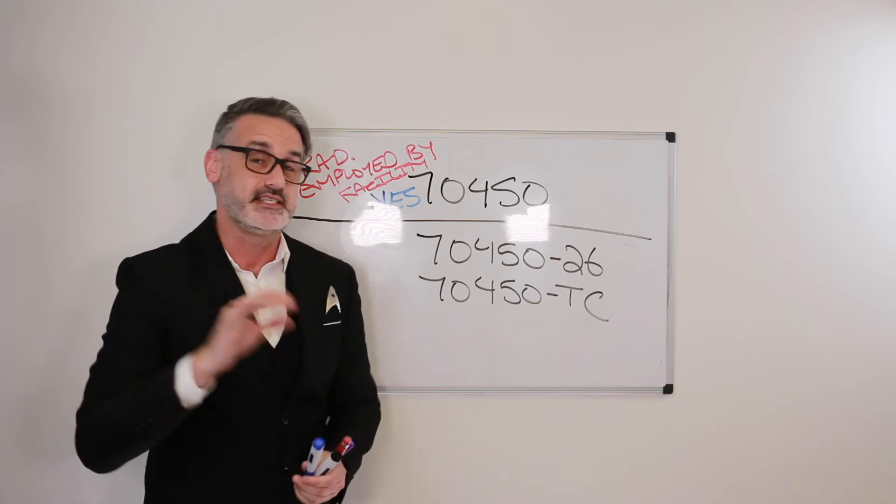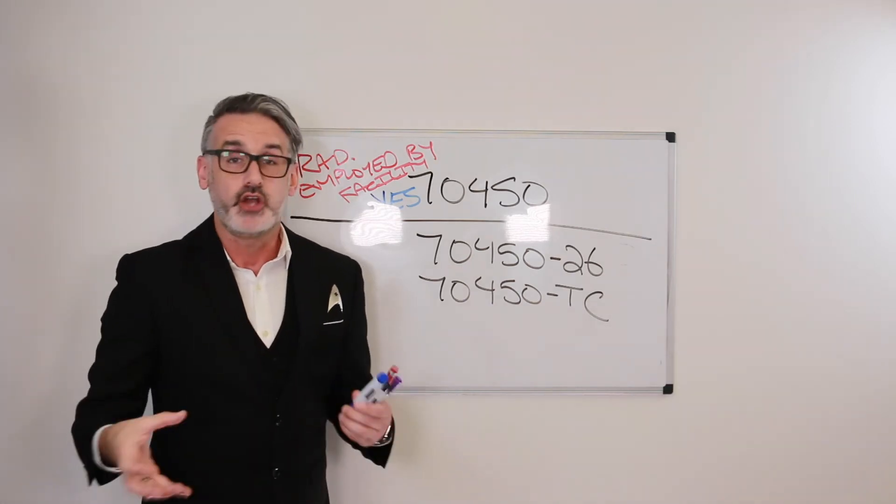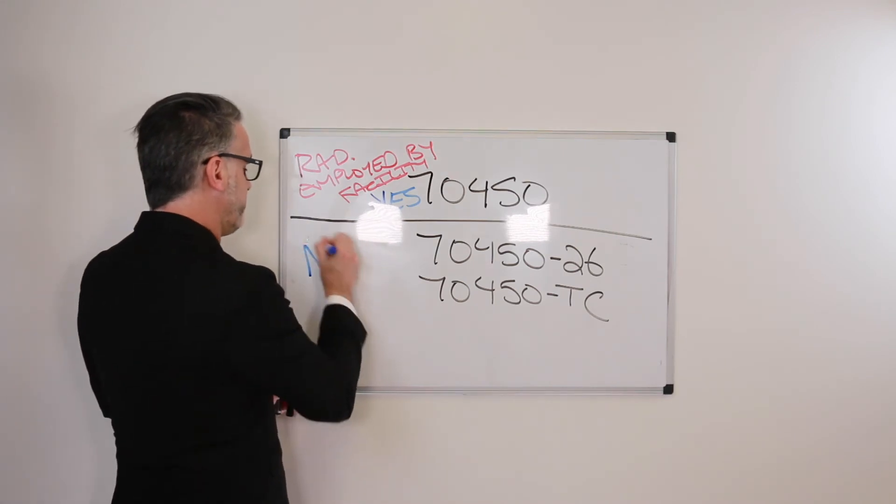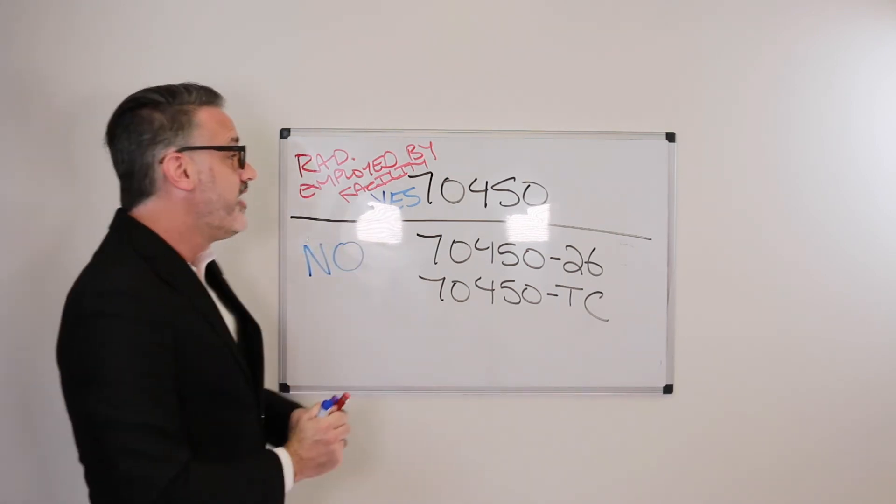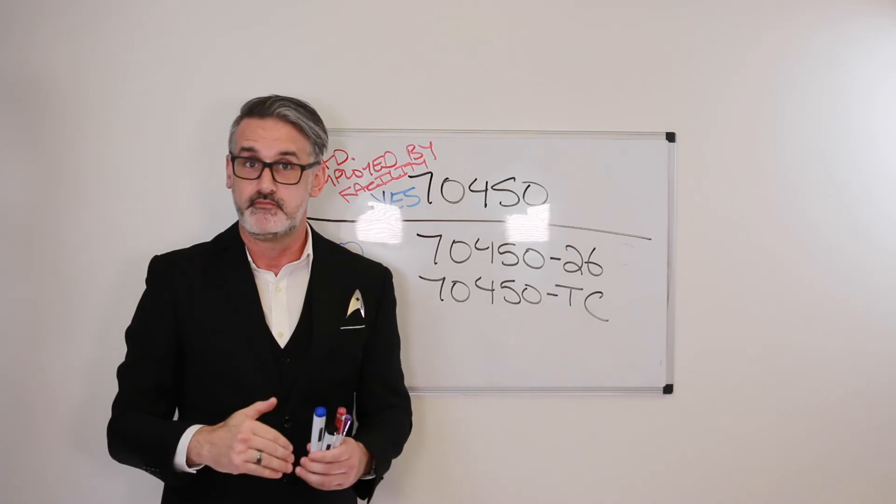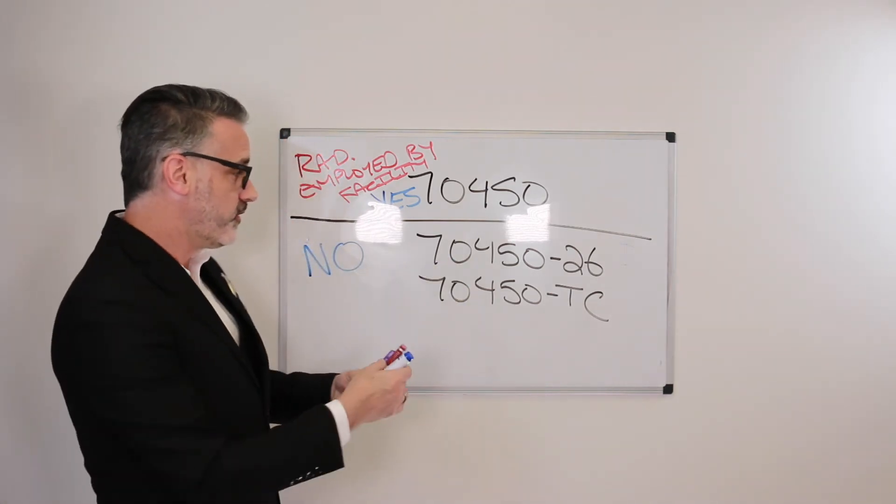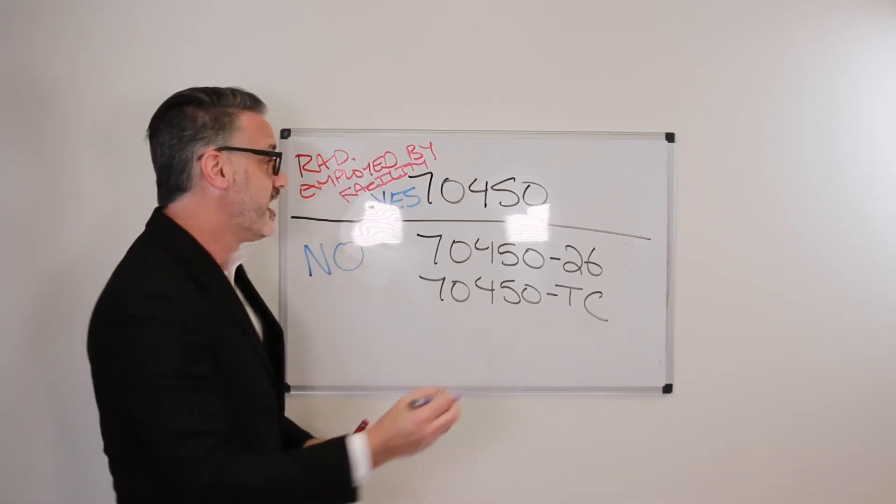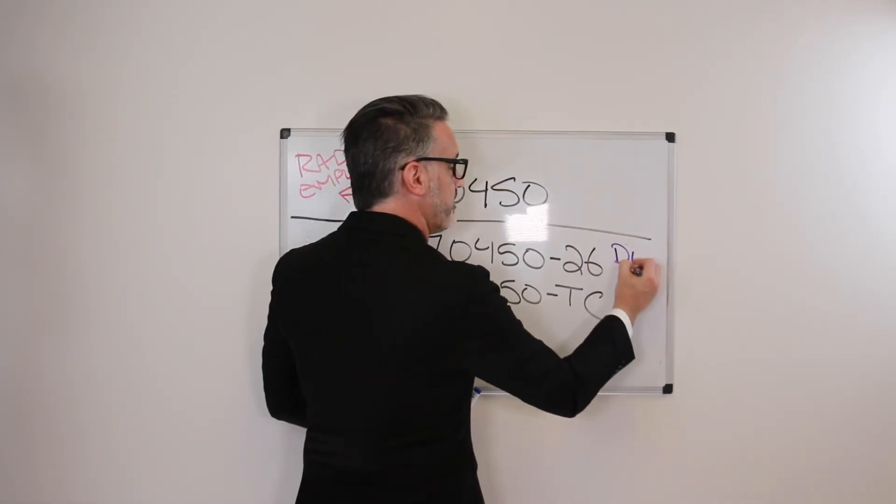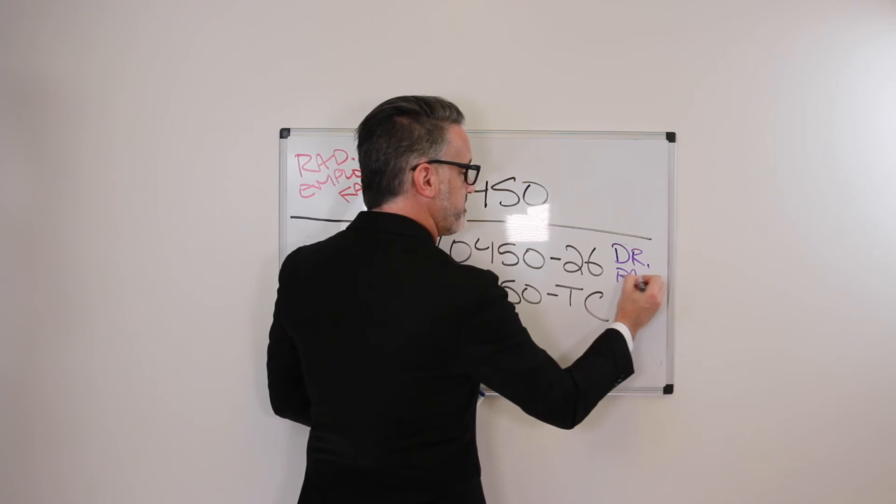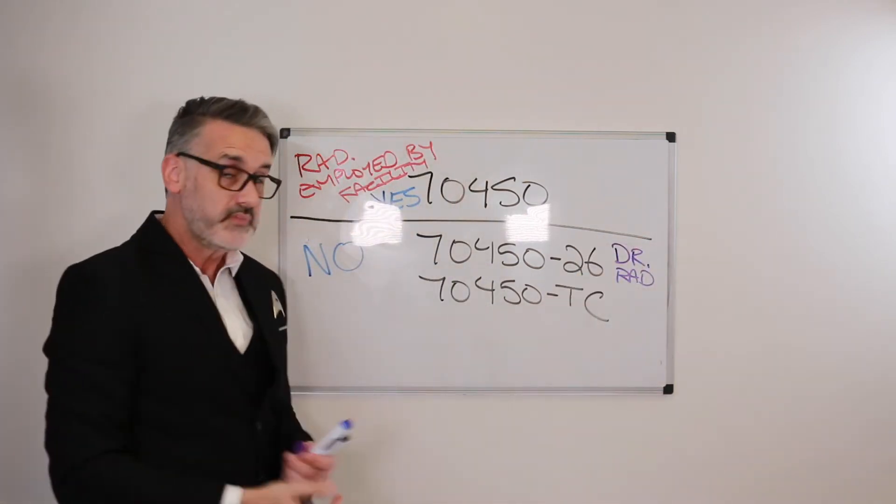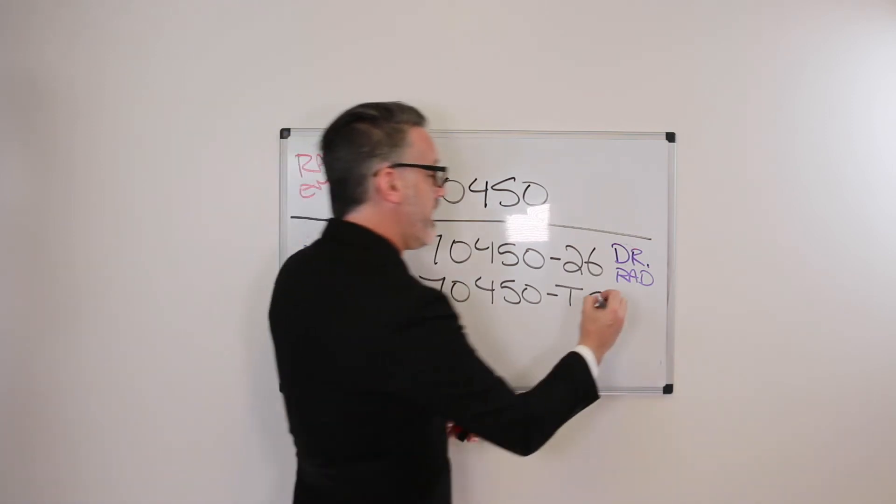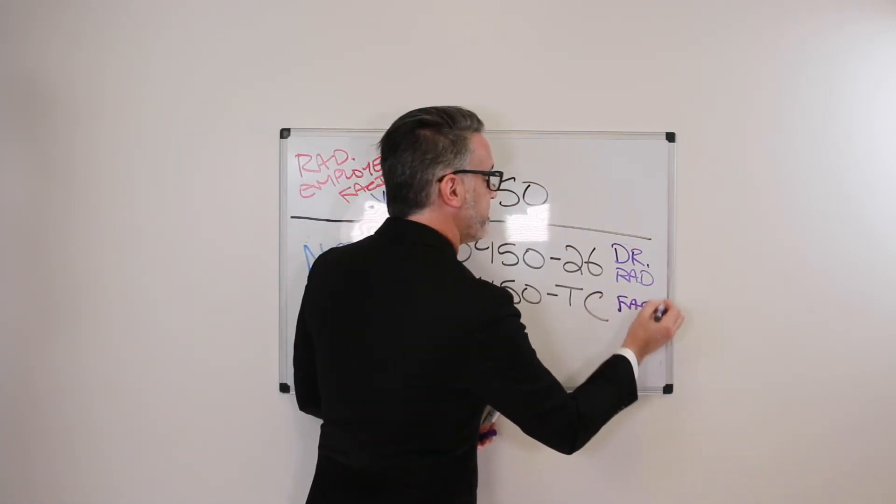But oftentimes, though, the radiologist is not employed by the facility. They're oftentimes separate entities. So then, if they are not employed by the facility, then we have to break it down to two separate modifiers. 70450, modifier 26, for the professional component, that goes to the doctor for the radiologist. So, say, Dr. Rad. Then modifier TC will be for the facility, the hospital. And I'll just put down FAC for facility.